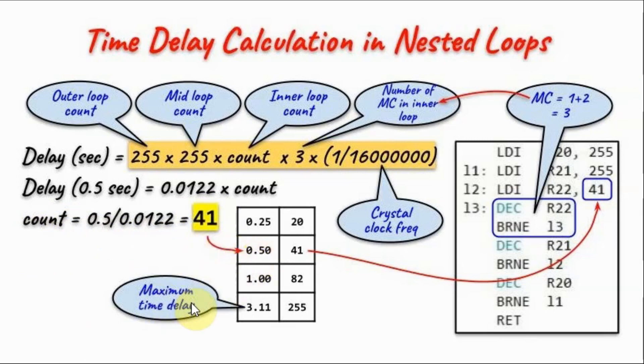The maximum time delay we can obtain is 3.11 seconds, when we choose the initial count value of the inner loop as 255.